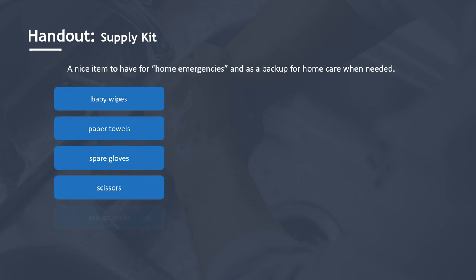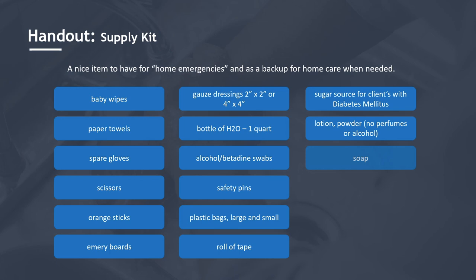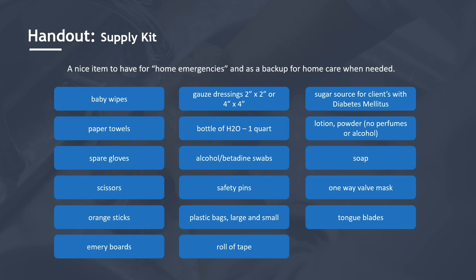Handout: A nice item to have for home emergencies and as a backup for home care when needed. Supply kit contents include: baby wipes, paper towels, spare gloves, scissors, orange sticks, emery boards, gauze dressings 2x2 or 4x4, a bottle of H2O one quart, alcohol or betadine swabs, safety pins, plastic bags large and small, a roll of tape, a sugar source for clients with diabetes mellitus, lotion or powder but no perfumes or alcohol, soap, a one-way valve mask, and tongue blades.